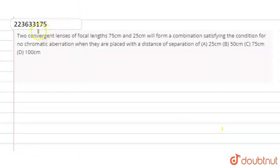I have a question. There are two convergent lenses with focal lengths 75 cm and 25 cm. It will form a combination that satisfies the condition that there is no chromatic aberration. So, how much distance is needed for the system?